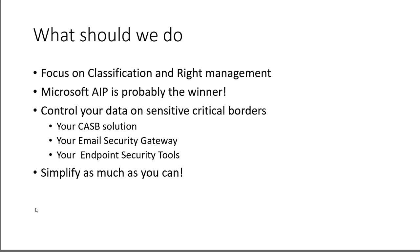What you should do is focus on classification — creating metadata at the endpoint level or at the storage level. Make sure you check and control data at the sensitive segments and sensitive borders. Your CASB solution (cloud access security broker), your email security gateway, or endpoint security tools can be the points where you look at that metadata and understand how to deal with that data. For example, if someone classified a document as highly sensitive and it is being attached to an email and sent out in clear text, that is where you should really check that document.